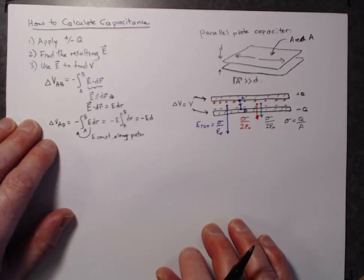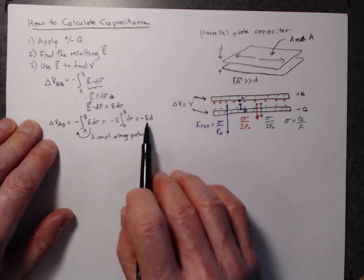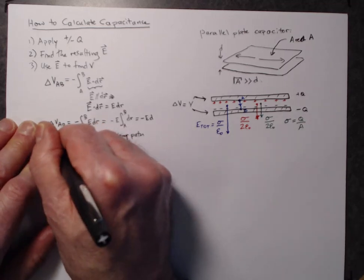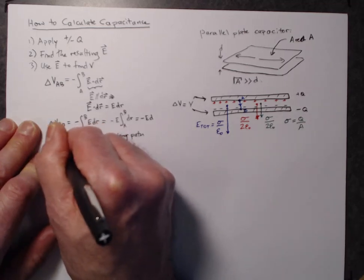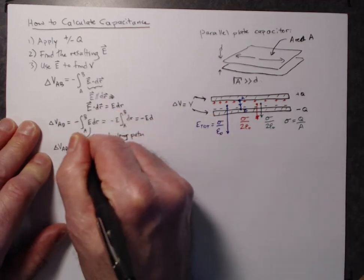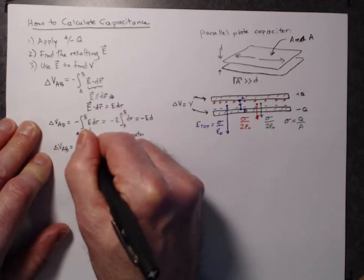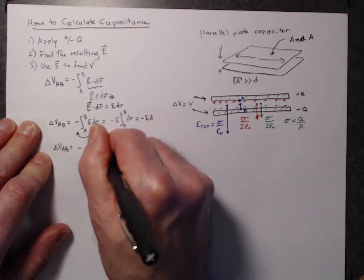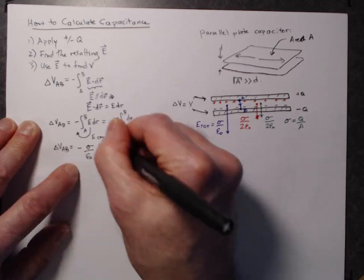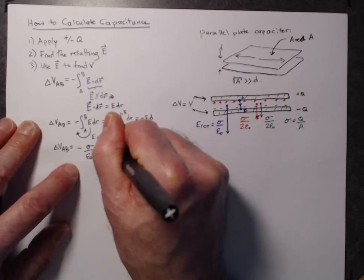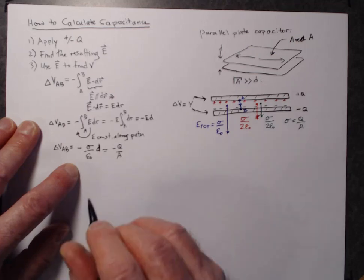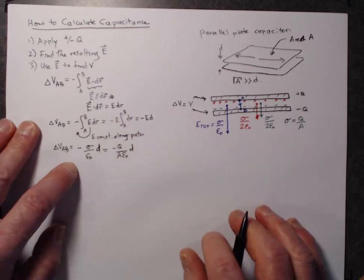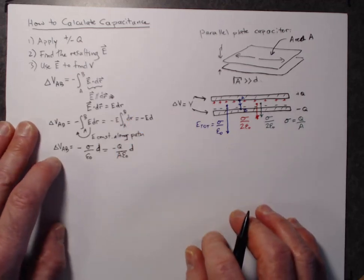So then we're going to plug in for our electric field. It's sigma over epsilon naught and sigma is Q over A. So delta VAB is equal to minus sigma over epsilon naught, that's E times D, which is equal to minus Q over A times one over epsilon naught times D. So that's the voltage that we just found.